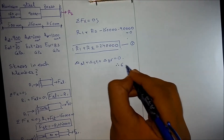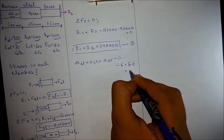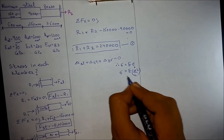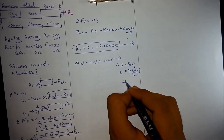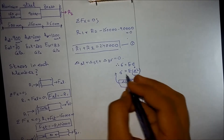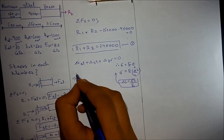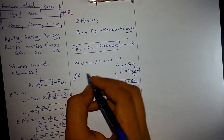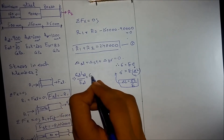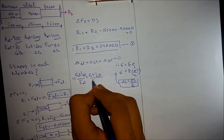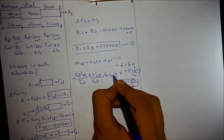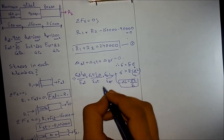We know that stress equals modulus of elasticity into strain, and strain equals change in length over original length. Rearranging, we get delta L equals stress times length over modulus of elasticity. Applying this to each member: stress in aluminium times length of aluminium over E_aluminium, plus stress in steel times length of steel over E_steel, plus stress in brass times length of brass over E_brass equals zero.